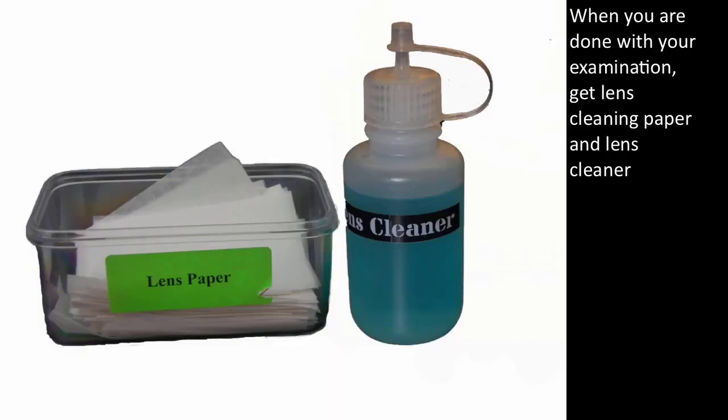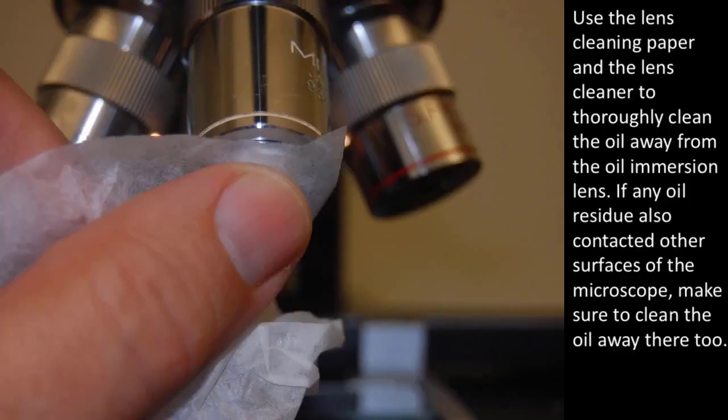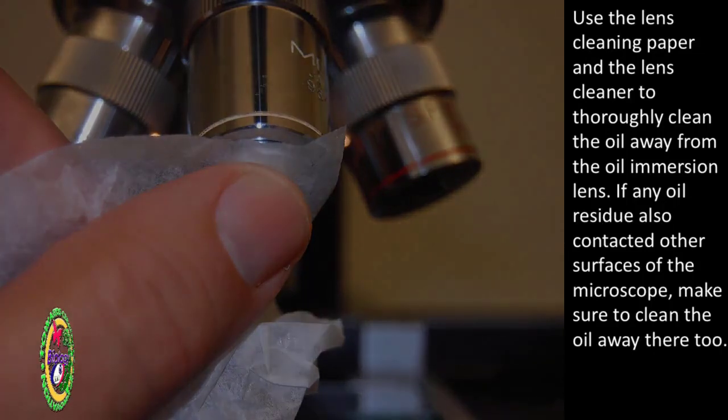When you are done with your examination, get lens cleaning paper and lens cleaner. Use the lens cleaning paper and the lens cleaner to thoroughly clean the oil away from the oil immersion lens. If any oil residue also contacted other surfaces of the microscope, make sure to clean the oil away there too.